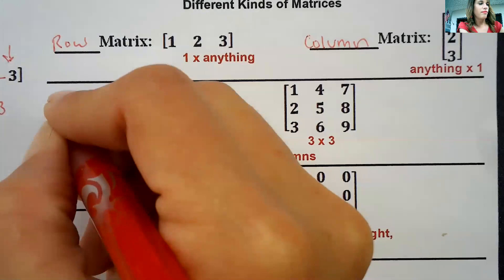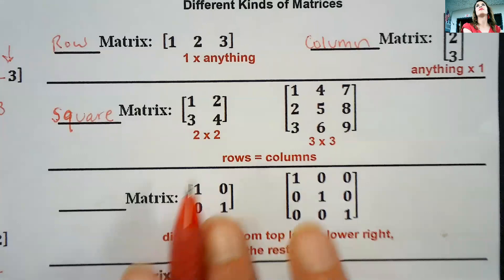A square matrix has the same number of rows and columns. So if it tells you the rows and the columns are equal, it's going to make a square matrix.